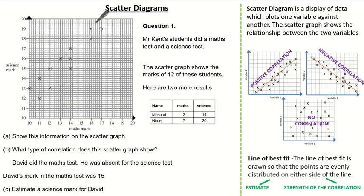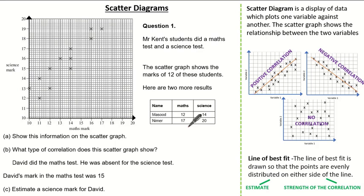In the exam the graph is printed very large for you to see, so plotting is much easier. Be aware of the scale when you plot — if you are more than one of these tiny little squares out, you don't receive the mark if you inaccurately plot. So let's carefully plot Masood with a maths result of 12 and a science result of 14. Now let's plot Nima with a maths result of 17 and a science result of 20.